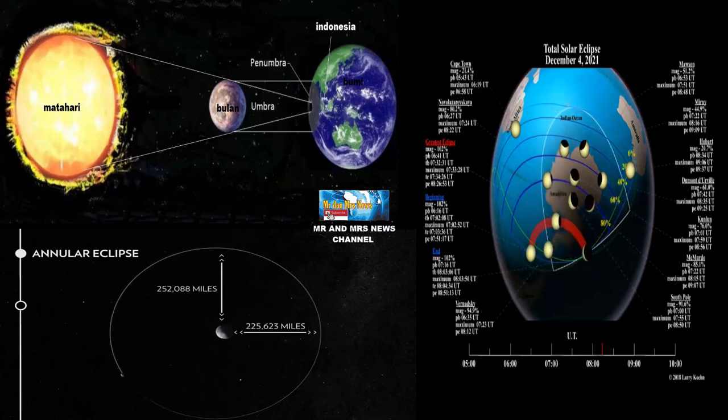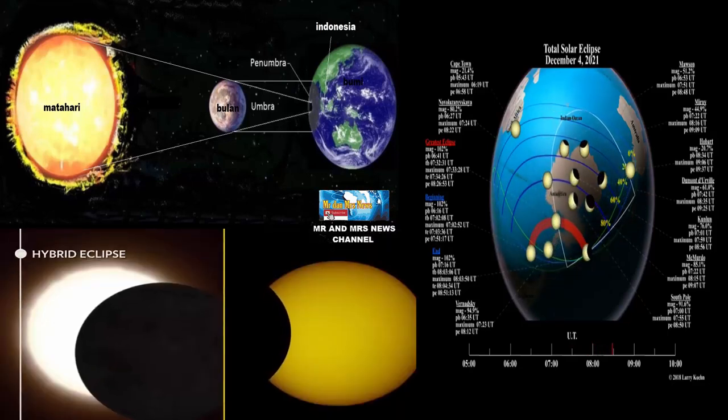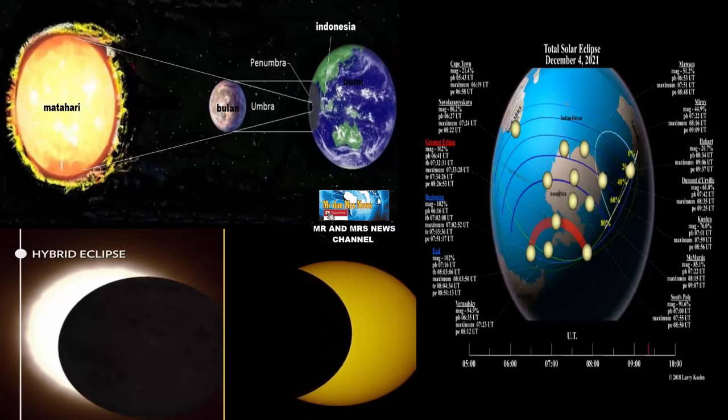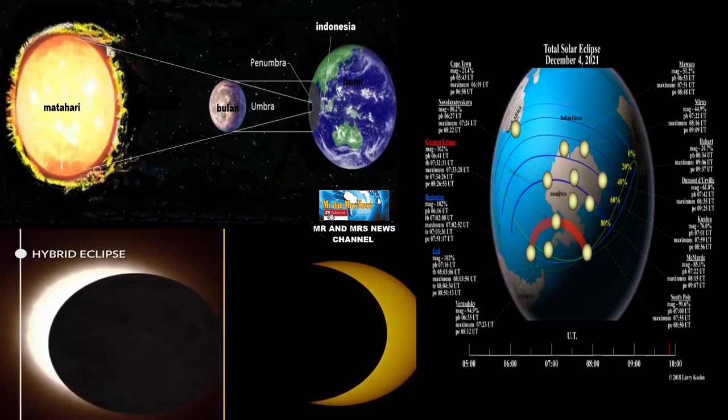Fenomena Gerhana Matahari Total terjadi bergantung pada jarak antara ketiga objek, yakni bumi bergerak dalam orbit ellipse mengelilingi matahari, dan bulan bergerak dalam orbit ellipse mengelilingi bumi, sehingga jarak antara benda-benda langit ini berubah.